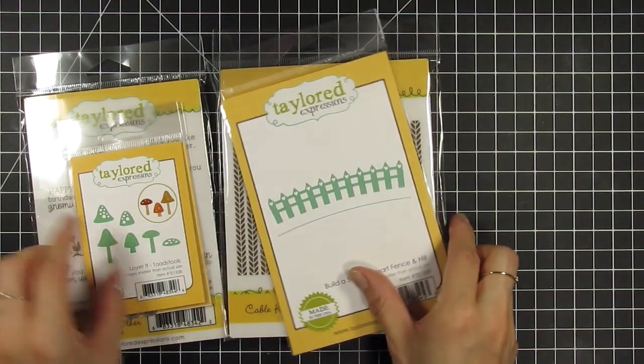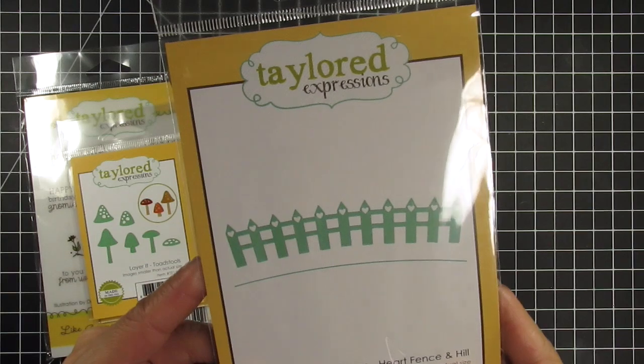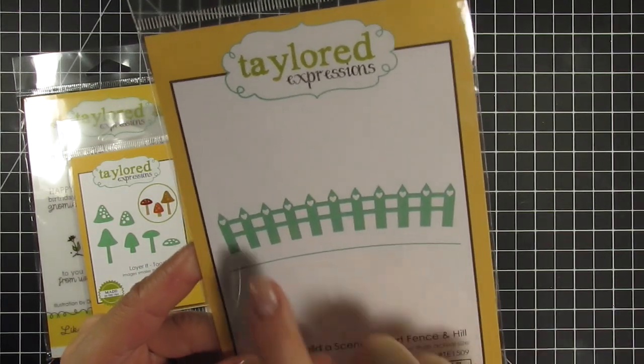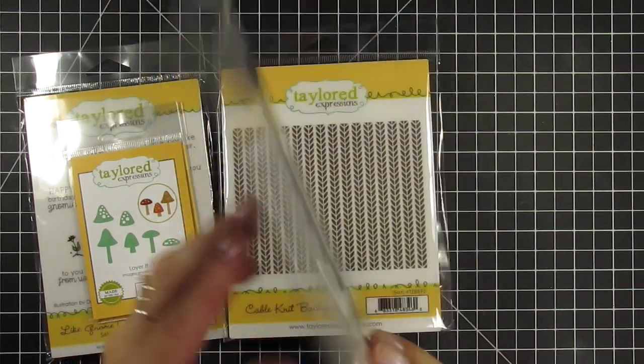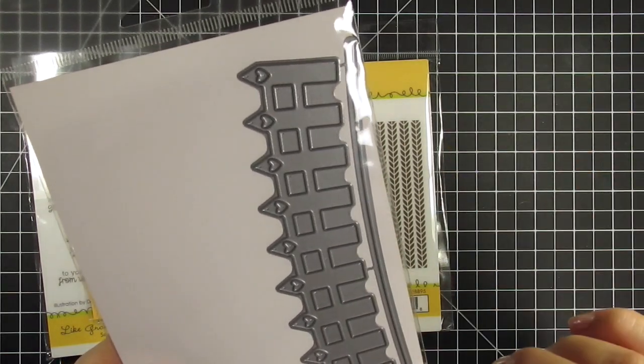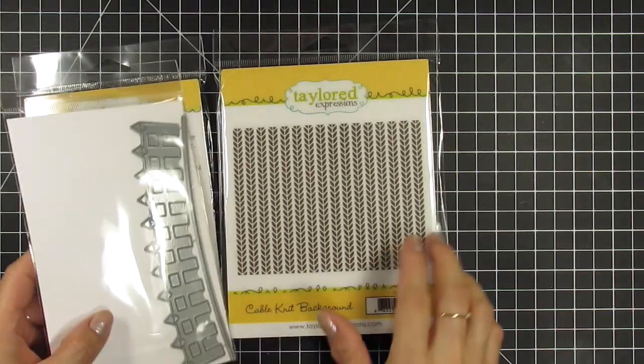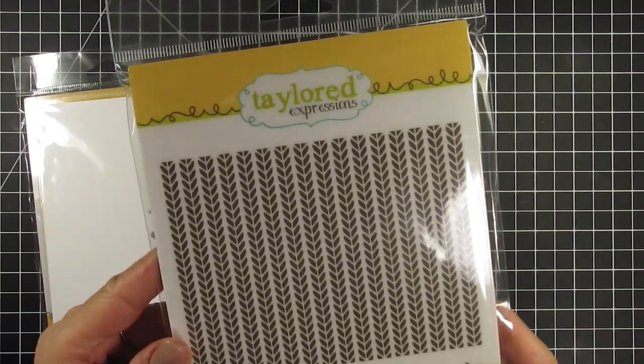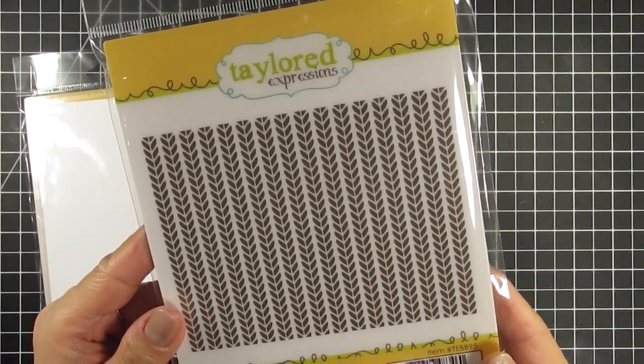These are the Build-A-Scene heart fence and hill dies which are so adorable and perfect for scenes. You get an arched die for the hill and then you get a fence that follows that same arch. The background stamp is a cute cable knit and I love that it also looks like leaves. This makes it so versatile.